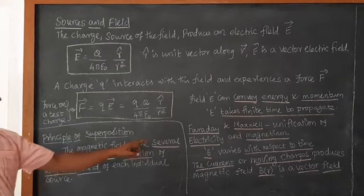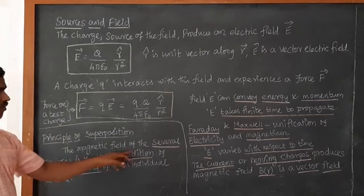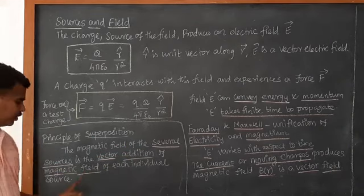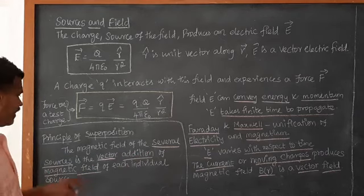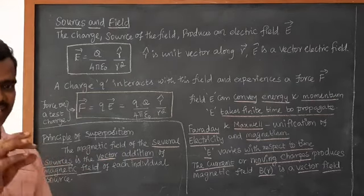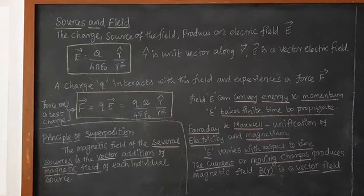So principle of superposition, the magnetic field of several sources, several sources is the vector addition of magnetic field of each individual sources. So we are going to add all those vector addition of magnetic field for each and every individual sources. And this is the source field. And next we move on to magnetic force, Lorentz force.